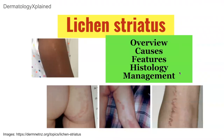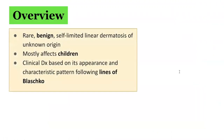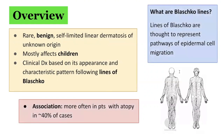Hello everyone, welcome to Dermatology Explained. Today we'll be speaking about lichen striatus. Lichen striatus is an asymptomatic, uncommon, self-limited linear dermatosis of unknown origin that generally affects children with ages between 4 months to 15 years. The diagnosis is usually made clinically based upon the appearance of the primary lesions and the distinctive developmental pattern. Its distribution along the lines of Blaschko, plus the age of the patient, typically children, usually narrows the differential diagnosis rather quickly.